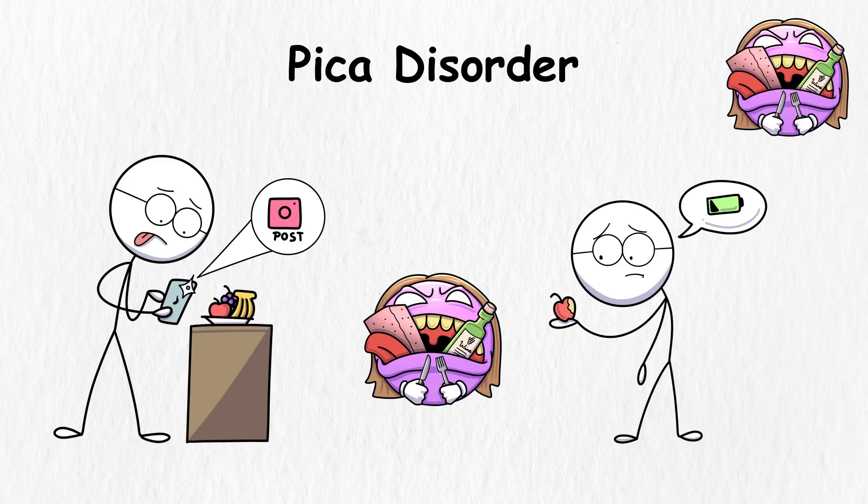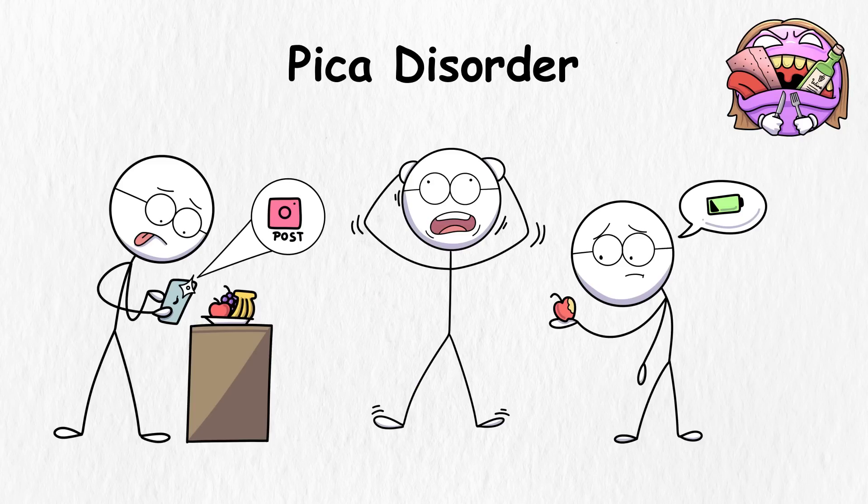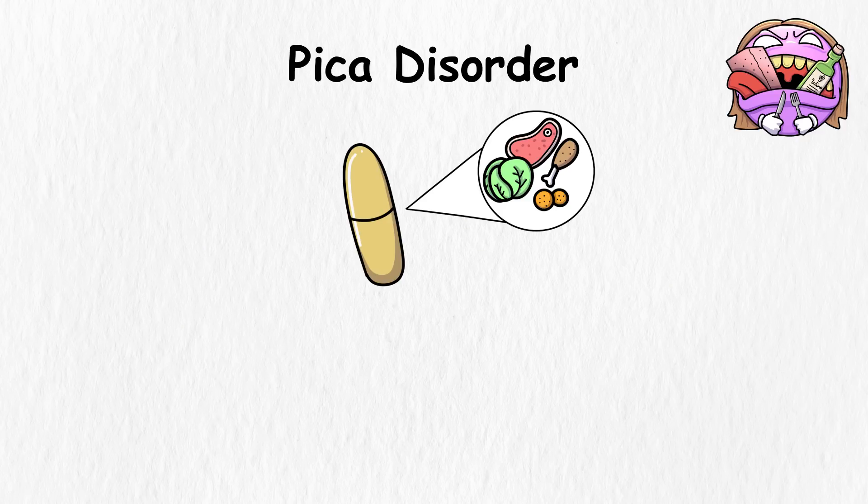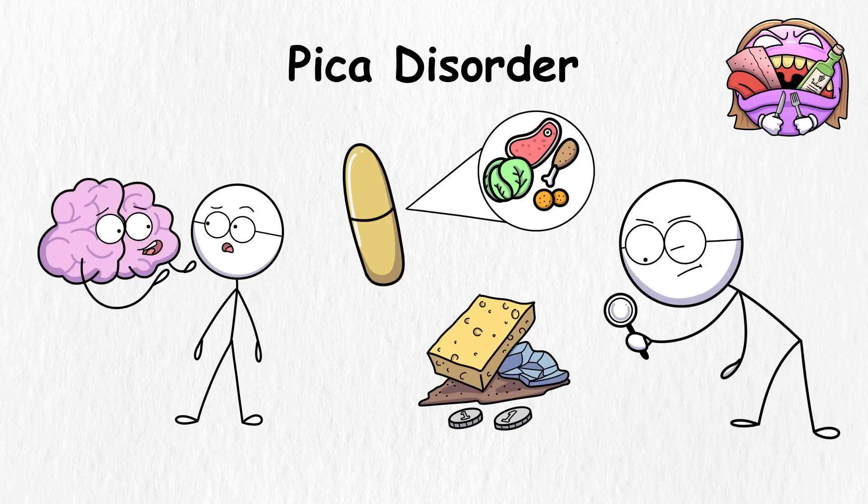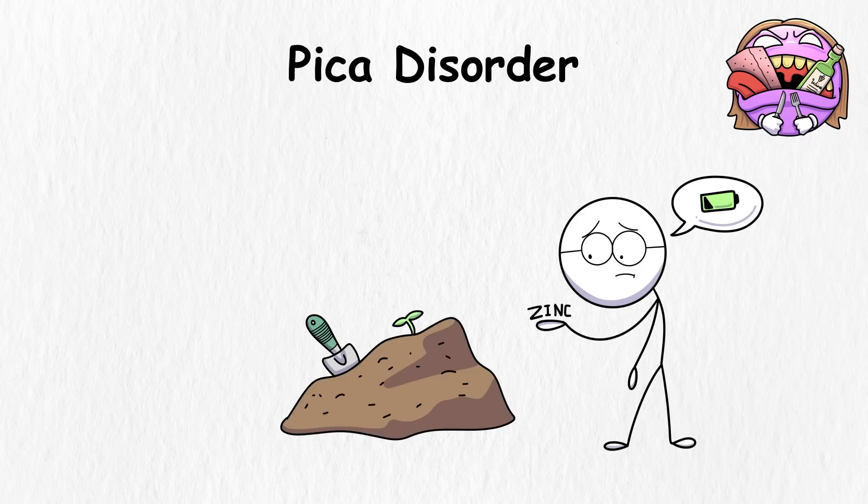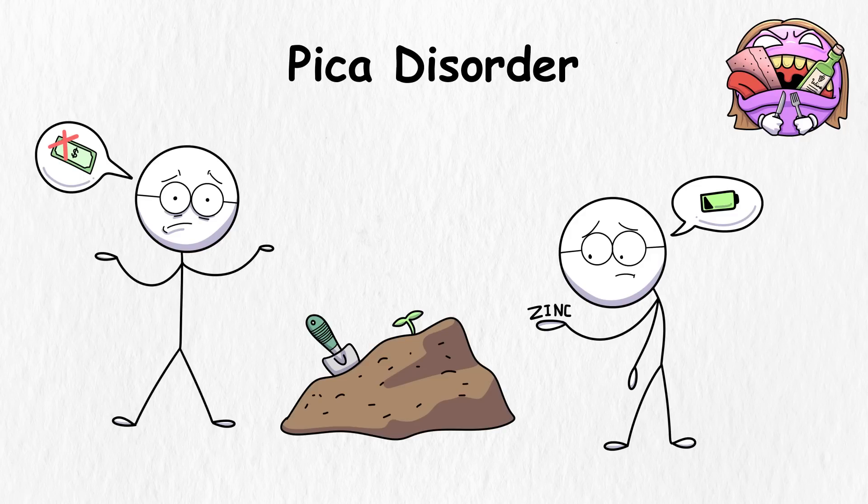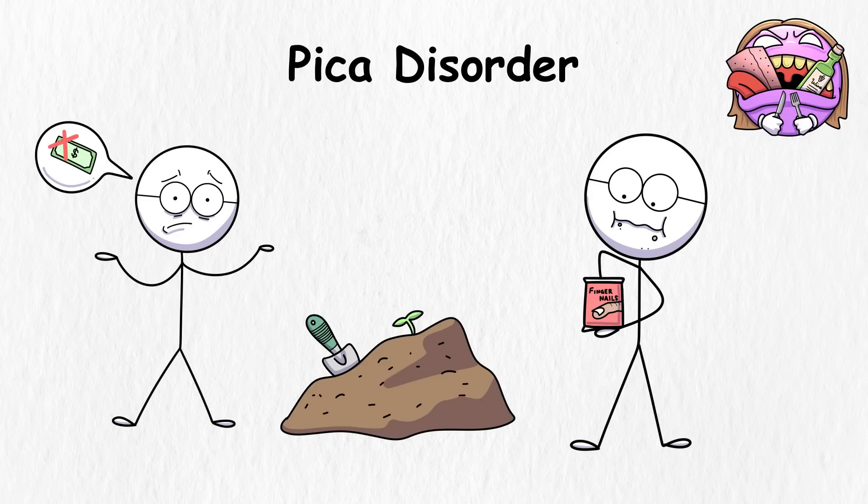Pica disorder is linked to nutritional deficiencies, or the stress and mental problems you're going through. When you lack certain vitamins and minerals, your mind will tell your body to look for them in anything, including non-food items. For example, if you lack zinc, you'd probably be craving garden soil, which is full of that stuff. Or when you're in the middle of a tough part of life, you eat your fingernails as a coping mechanism.